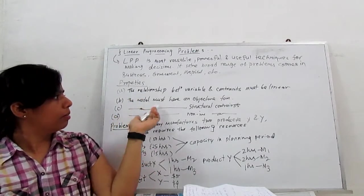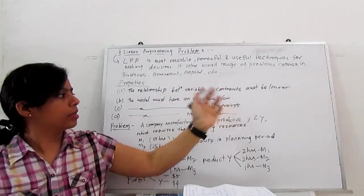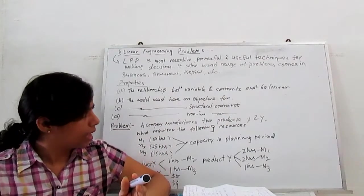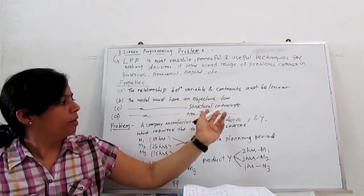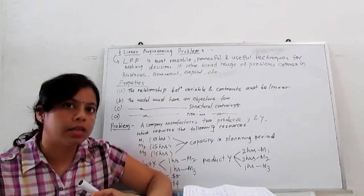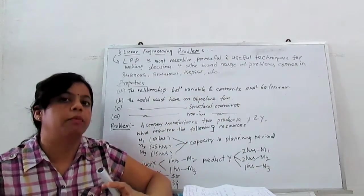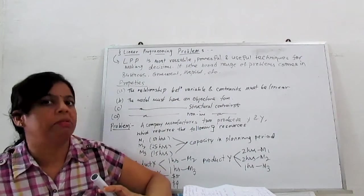Third, the model must have structural constraints. These structural constraints help to solve the LPP, and when we find these structural constraint values, we put them in our objective function to get the maximize result or maybe minimize result.